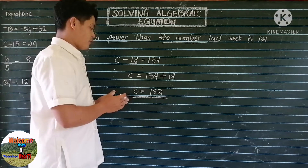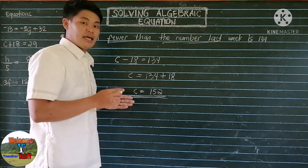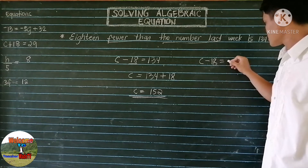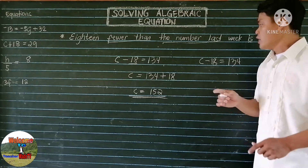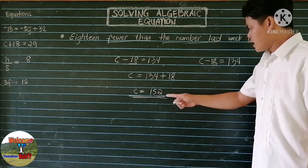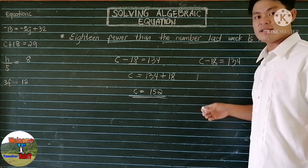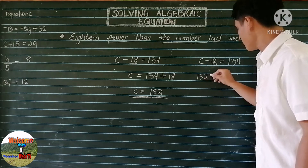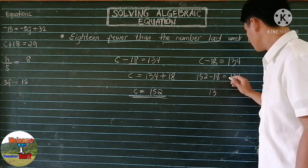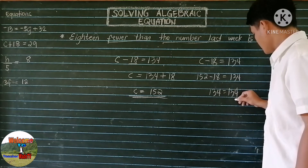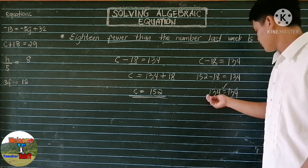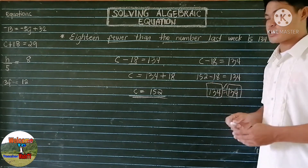Now let us check if this equation is balanced. We copy the original equation: C minus 18 equals 134. To check, substitute the value of the variable. Since C is 152, we have 152 minus 18 equals 134. The answer is 134, so the equation is correct because it is balanced.